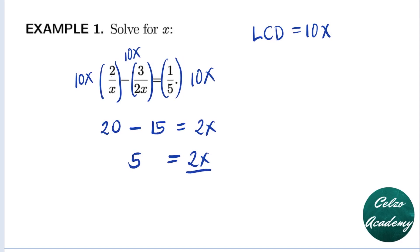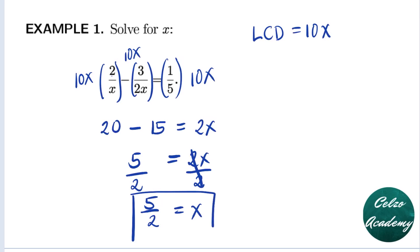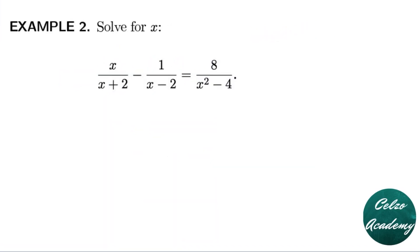Solving for x, we divide both sides by 2, so x equals 5/2 or 2.5. The value x = 5/2 or 2.5 will not make any denominator equal to 0, so there is no extraneous solution.